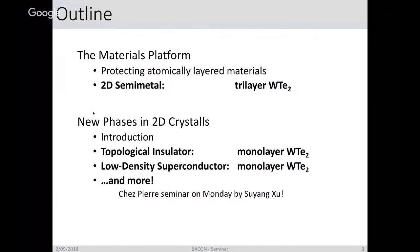So I'll begin with an outline of the materials platform, and of the material in particular, starting with the 3D crystal and how we protect these samples in the ultra-thin limit. And I'll briefly discuss tri-layer WTe2, which is expected to be a 2D semi-metal, as our sort of litmus test, as our control to see if our fabrication scheme is working. And then we'll look at the new phases for 2D crystals, which is the topological insulator and the low-density superconductor. There's also a lot of other exciting phenomena that occur in this crystal, and you may hear more about this from Su Yang Xu, a post-doc working with us, at the Shea Pia seminar on Monday, and I encourage everyone to attend this.